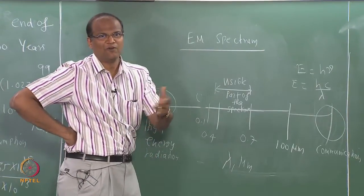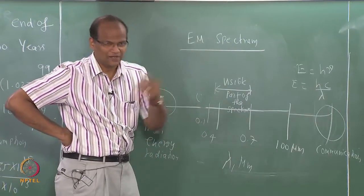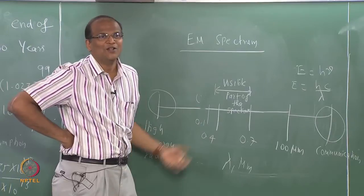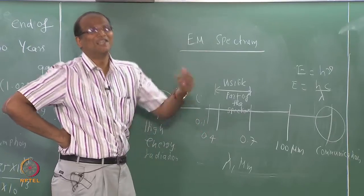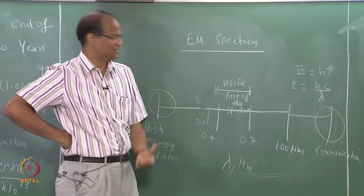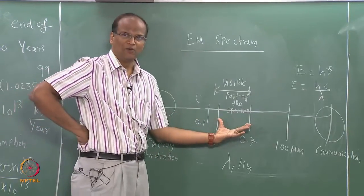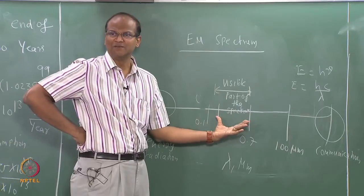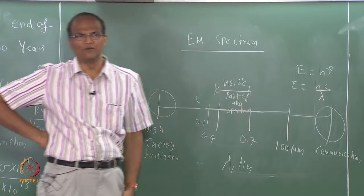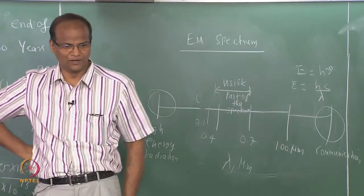We will derive this later on. For temperatures encountered in mechanical engineering, the radiation emitted is in the wavelength range of 0.1 to 100 micrometers.